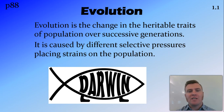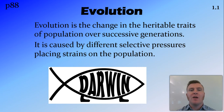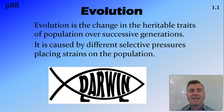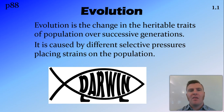Evolution is caused by different selective pressures that place strain on a population. Plants or animals are not under any pressure to evolve if things are static and staying the same. It's only when things change and place a selective pressure on the population that evolution occurs.